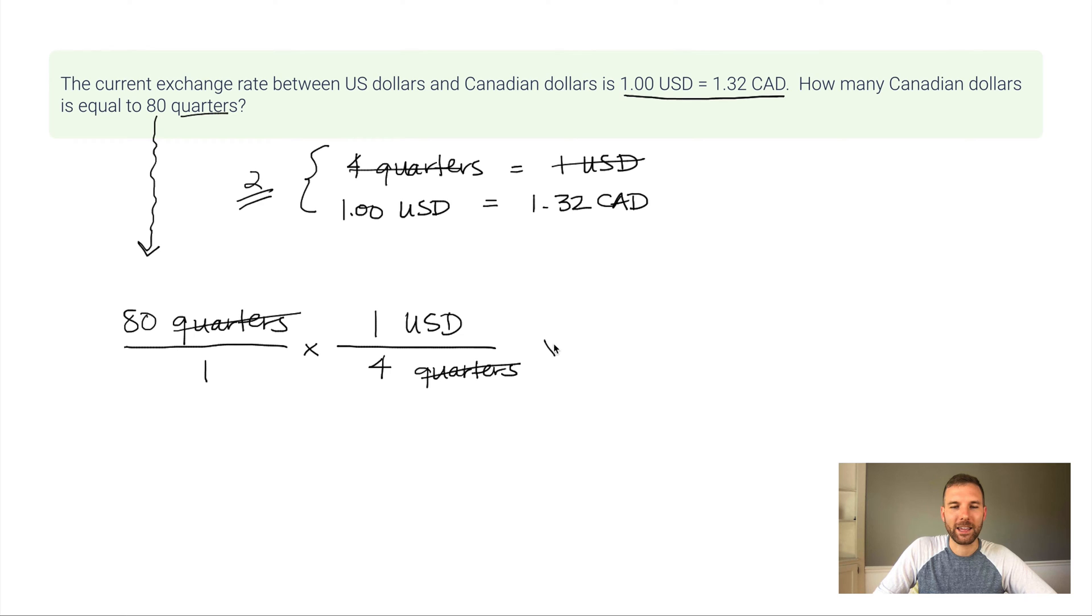So here's what I do. I can keep going. I want to put in another fraction for this other conversion factor. One US dollar is on the bottom. Now this is coming from my second conversion factor here. And 1.32 Canadian dollars is on the top. I cross off what I have canceled out, US dollars in this case, and I'm left in Canadian dollars.